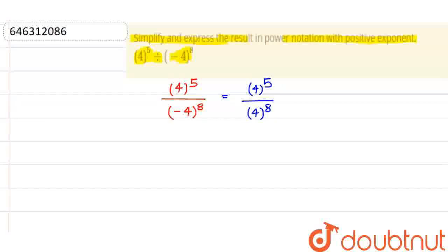Or you can write this thing as you can write minus 4 as minus 4 into minus 4 into 4. So you can write this thing as also that minus 1 to the power of 8 and we know that minus 1 to the power of 8 is plus 1. So that is 4 to the power of 5 upon 4 to the power of 8.